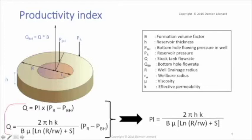The second formula: stock tank flow rate equals 2 times pi times reservoir thickness times k, which is effective permeability, all divided by the formation volume factor multiplied by the viscosity multiplied by this factor,